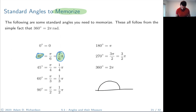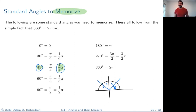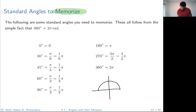Forty-five degrees is π/4 — a quarter of pi. It's like the middle angle, right in the middle. If you cut pi into four equal pieces, 45 degrees is one of them. So 45 degrees equals one fourth of pi, or π/4.